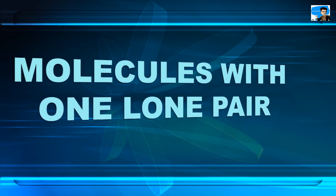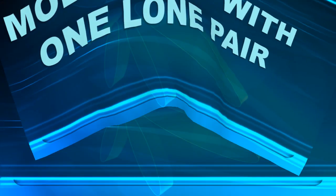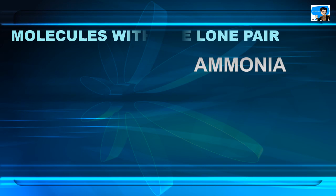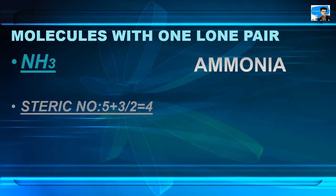An example of a molecule with a single lone pair is ammonia, NH3. In ammonia, the steric number is 4 and the surrounding atoms are 3. Hence lone pair = 4 minus 3 equals 1. Ammonia has one lone pair. Next is the water molecule, which has...